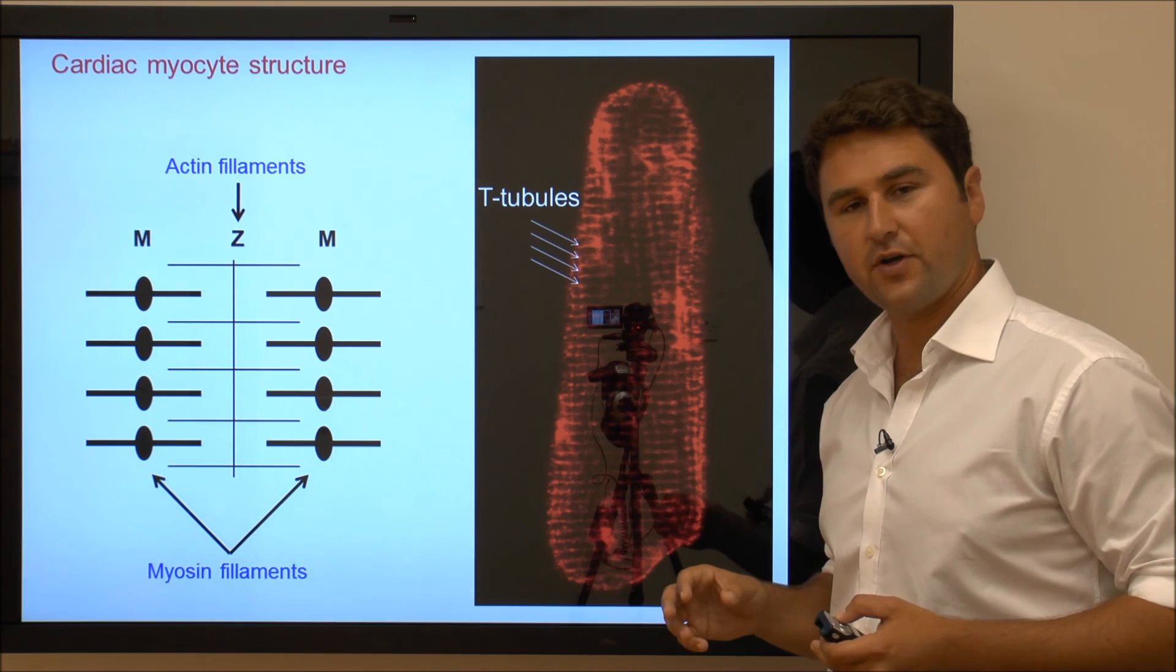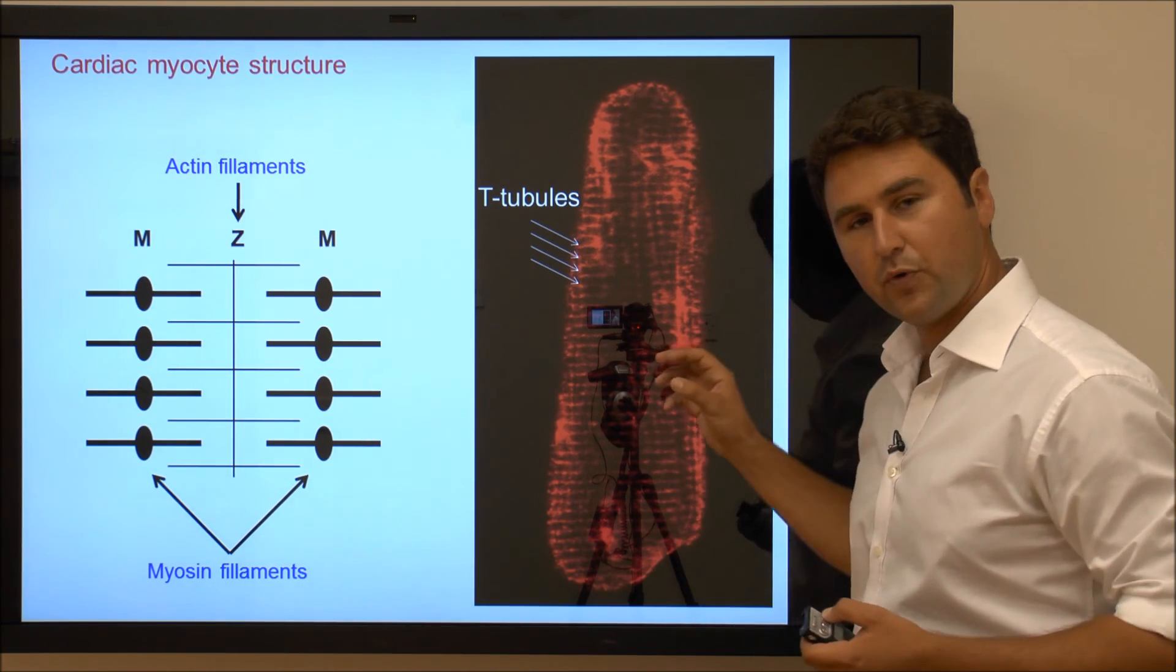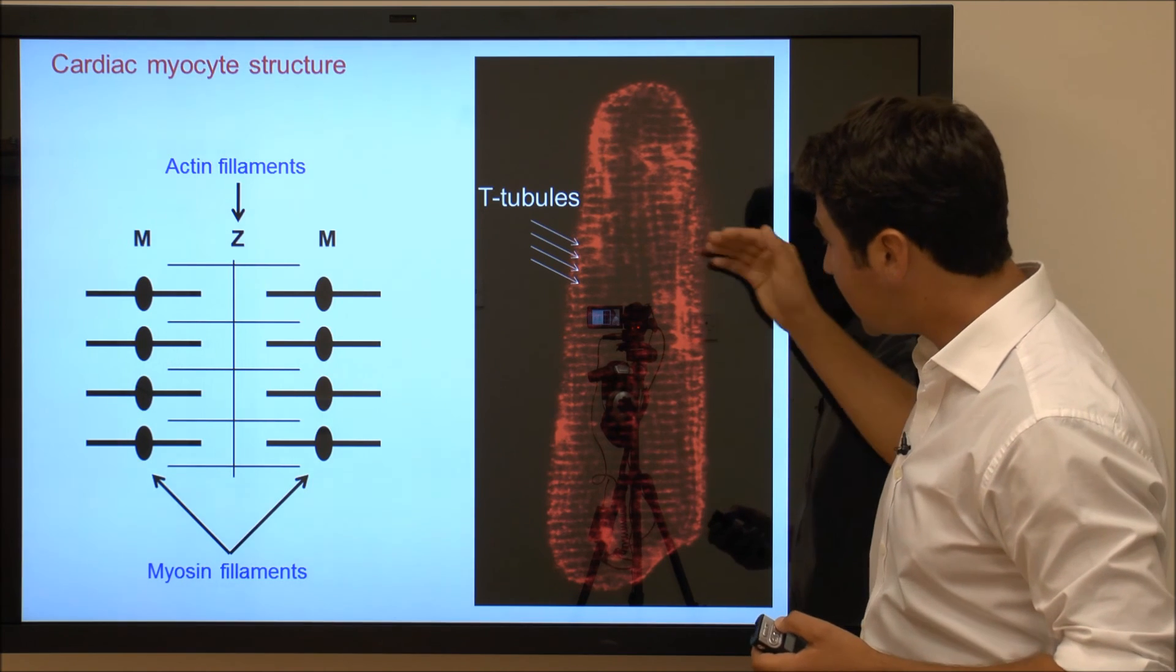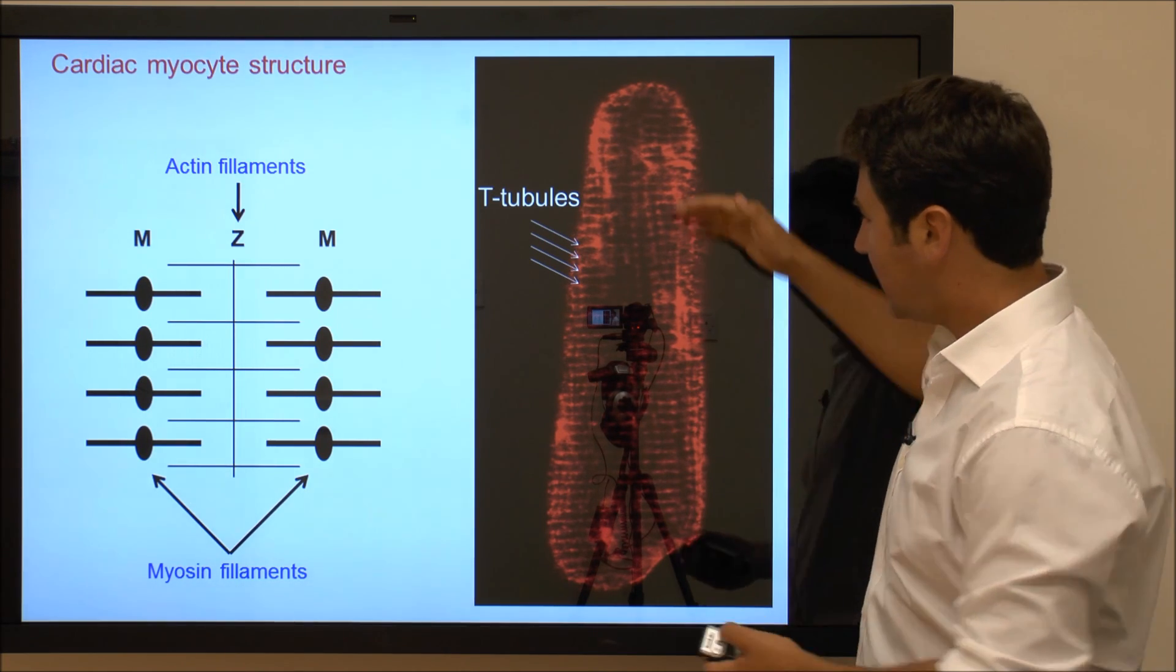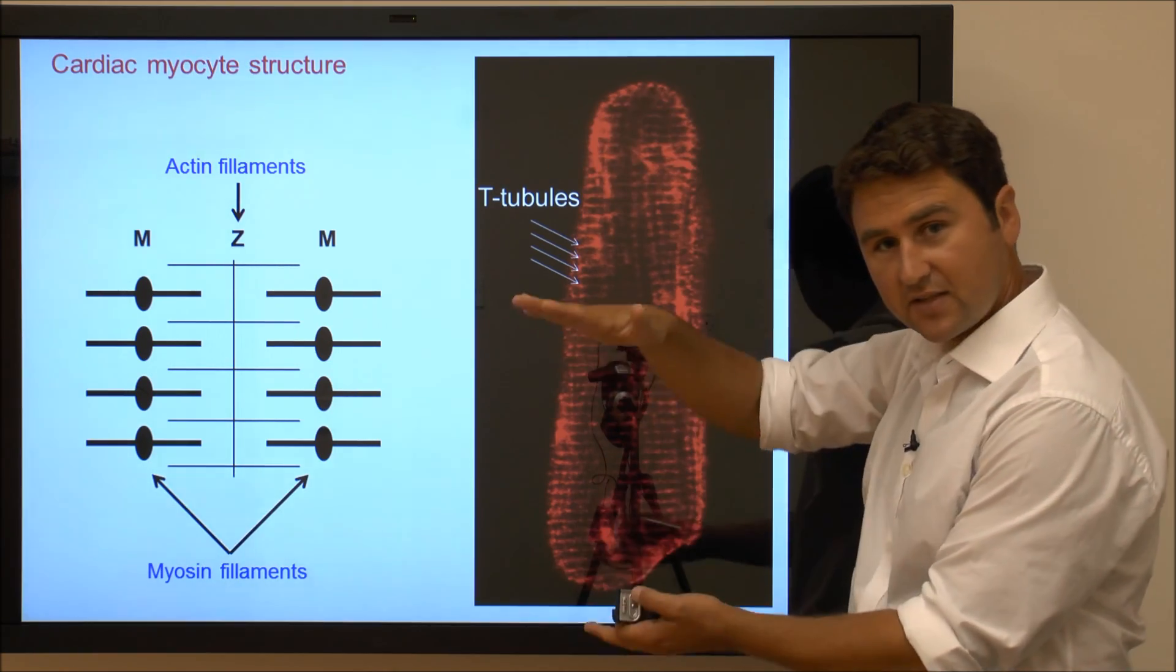And as we will cover in a video on action potential, this is particularly important for contraction, as it allows every single part of the cardiac myocyte to contract at exactly the same time.